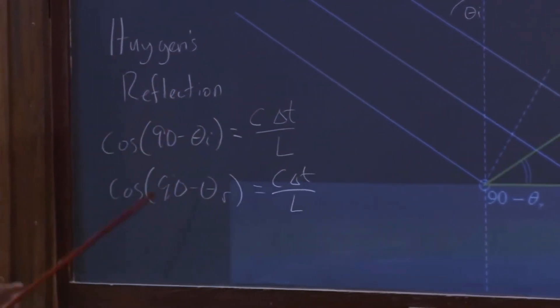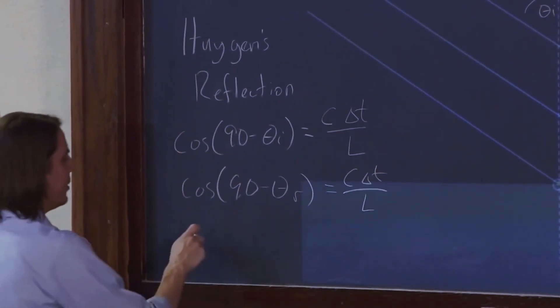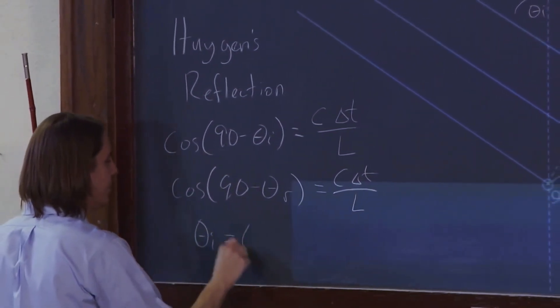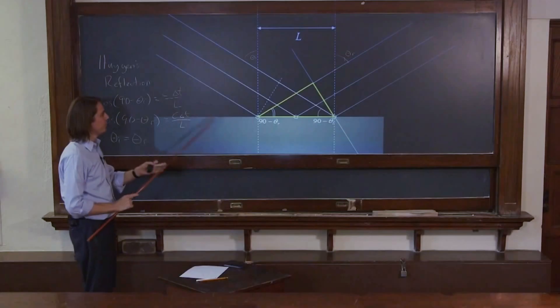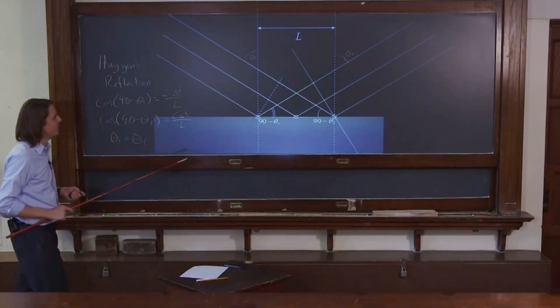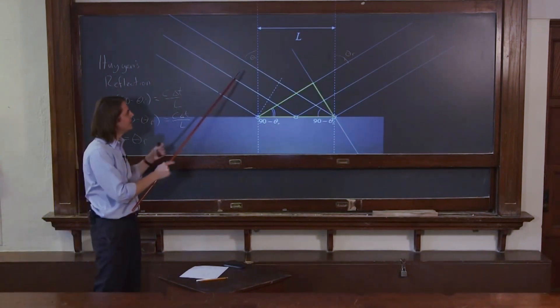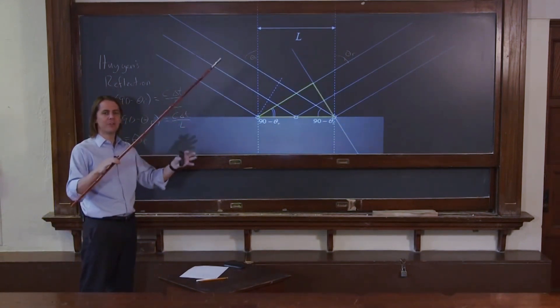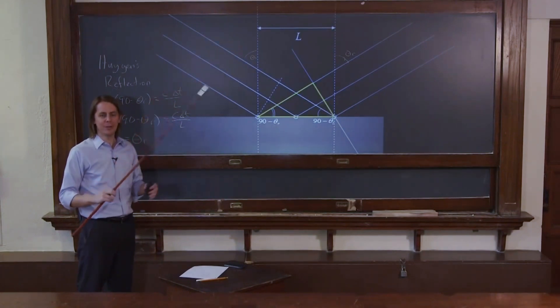So you can see from this expression, if that is all true, then theta i equals theta r. So kind of a geometrical argument. You could also do it with graph paper and prove it to yourself truly geometrically that the angle of incidence equals the angle of reflection. And you get it from this idea that a plane wavefront splits into spheres, and the spheres propagate rather than the plane.